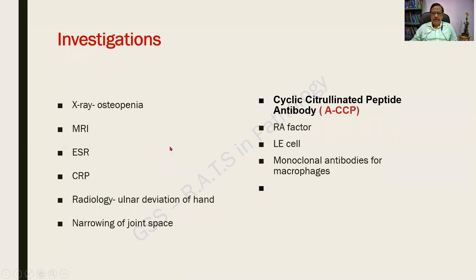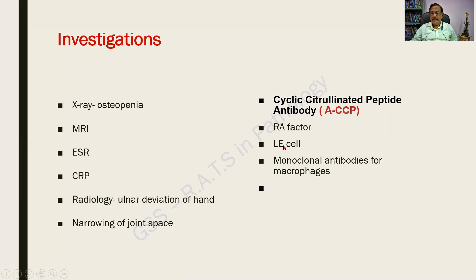Investigations include both nonspecific and specific tests. X-ray shows osteopenia — loss of bone. MRI can also be used. ESR is raised, and C-reactive protein is elevated due to the inflammatory nature. Radiologically, there is ulnar deviation and narrowing of joint space. A specific antibody is anti-CCP (anti-cyclic citrullinated peptide antibody). Rheumatoid factor — the classical RA factor — is positive in 75% of cases and can also be seen in SLE. The LE cell is a prototype seen in rheumatoid arthritis and mainly in SLE. Monoclonal antibodies for macrophages can be used for laboratory diagnosis.